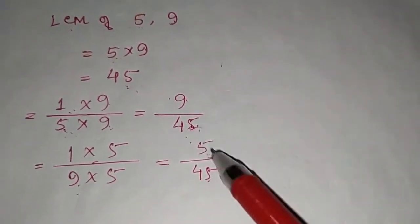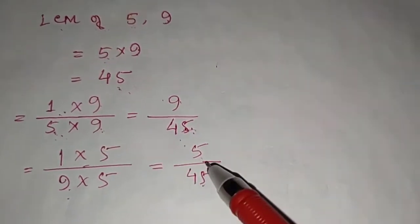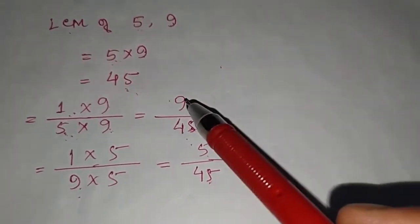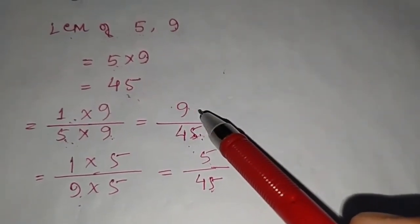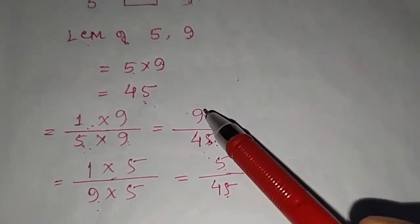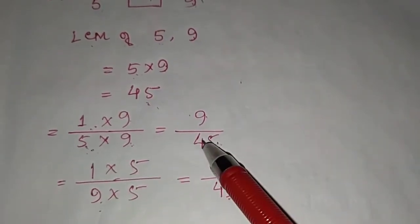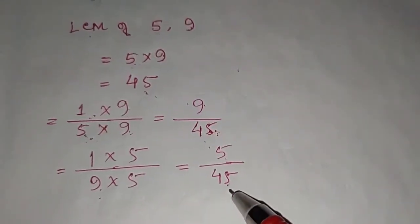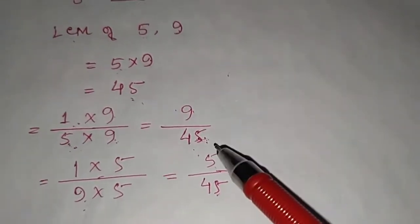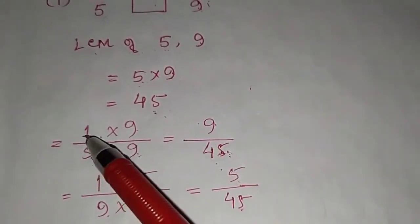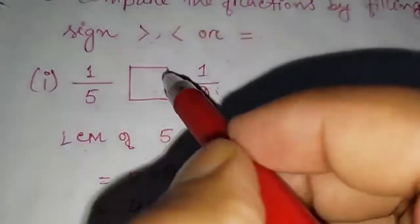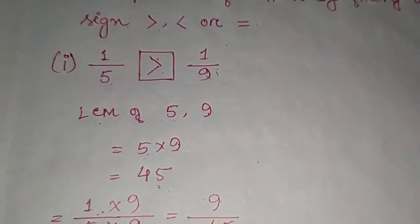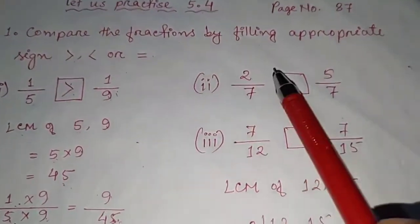Now the denominators are the same (45 and 45), so we consider the numerators. Which is greater — 9 or 5? Obviously 9 is greater, meaning 1/5 is the greater fraction and 1/9 is the smaller fraction. Therefore: 1/5 > 1/9.